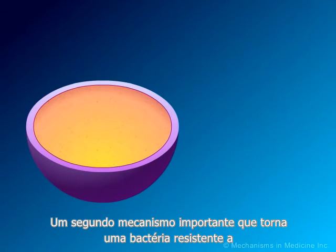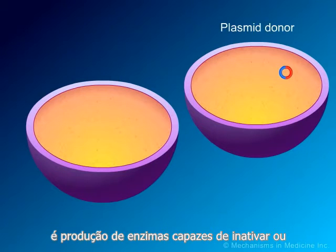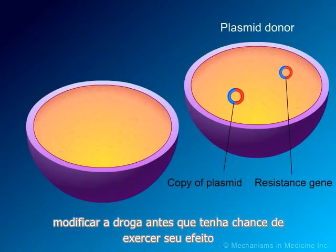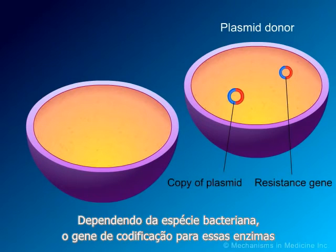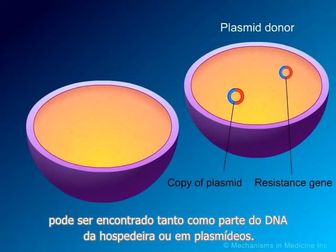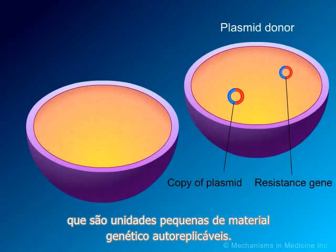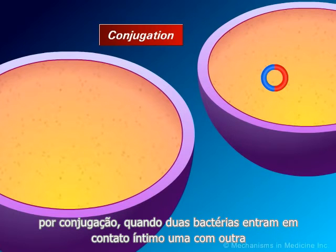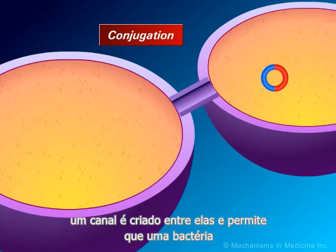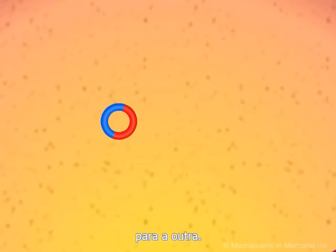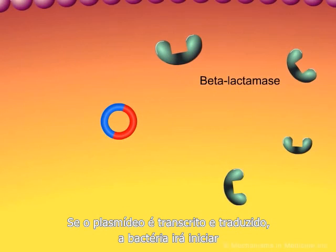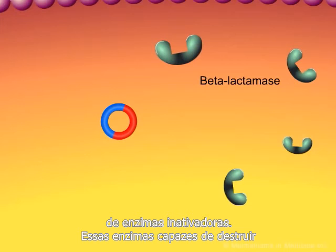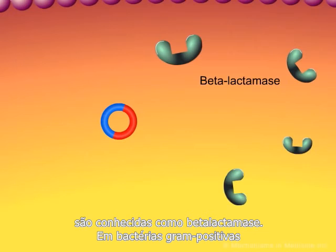A second important mechanism by which bacteria become resistant to beta-lactam antibiotics is by the production of enzymes capable of inactivating or modifying the drug before it has a chance to exert its effect on the bacteria. Depending on the bacterial species, the gene coding for these enzymes may be found as part of the host DNA or on plasmids, which are small, self-replicating units of genetic material. Bacteria are capable of passing these resistance plasmids to each other by conjugation. When two bacteria come into close contact with each other, a small channel is created between them which allows one of the bacteria to pass a copy of the resistance plasmid to the other. If the plasmid is transcribed and translated, the bacteria will begin to produce inactivating enzymes. These enzymes, capable of destroying beta-lactam antibiotics, are known as beta-lactamases.